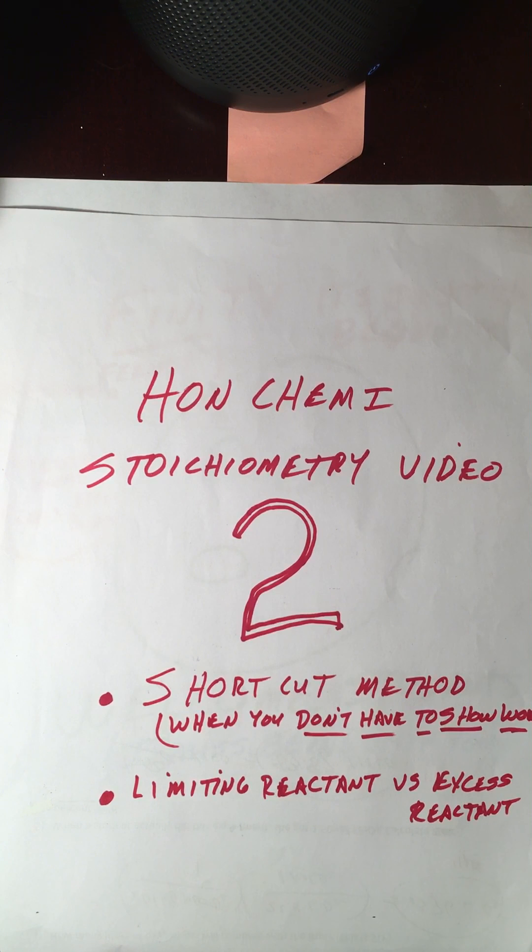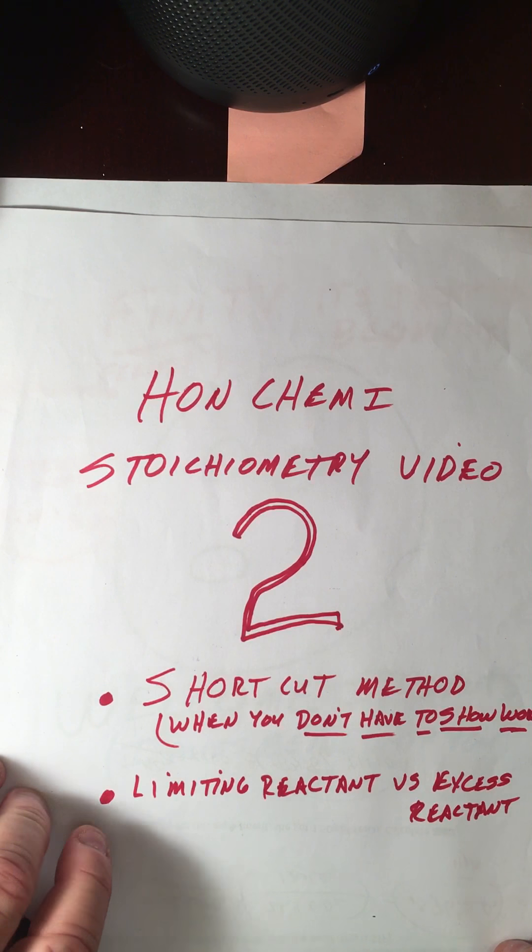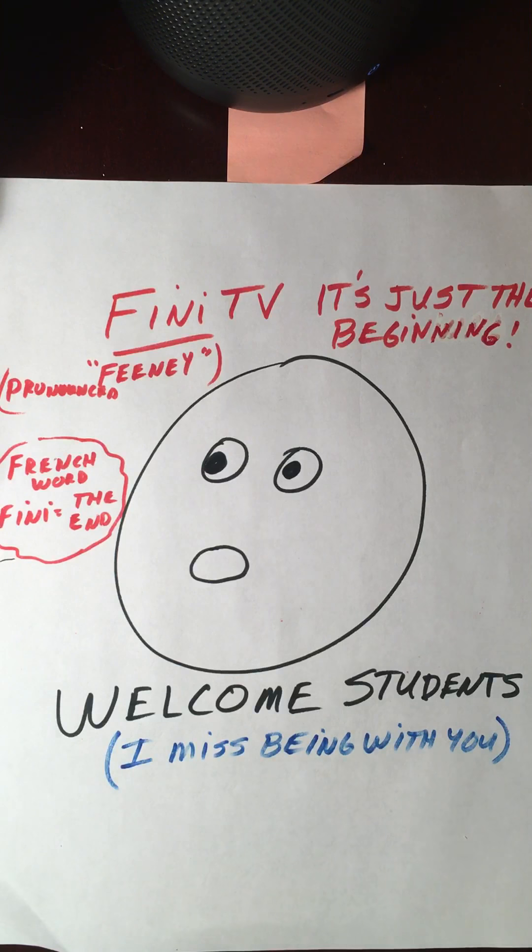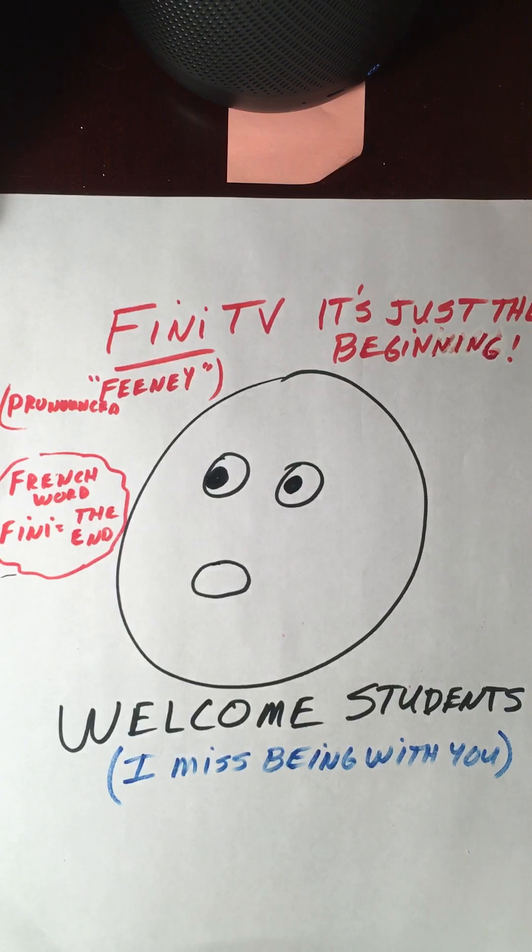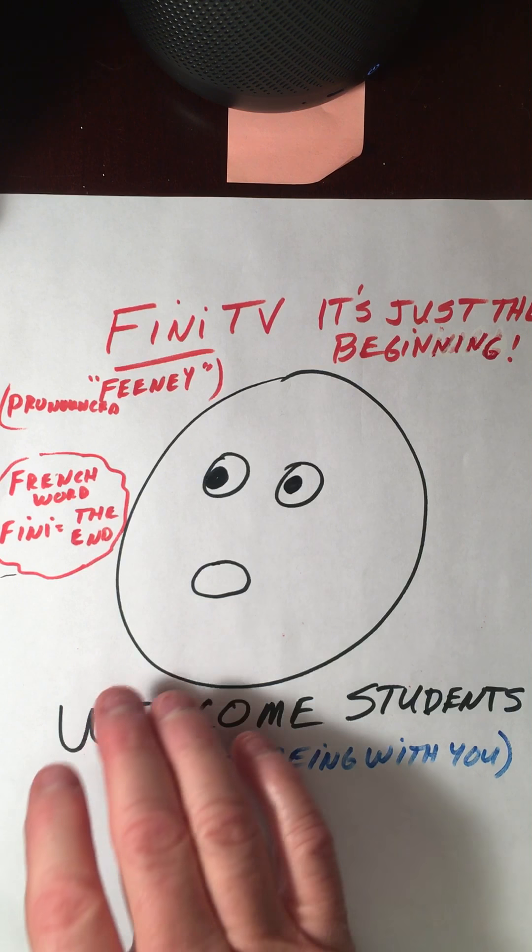Hello, this is the second video in the stoichiometry series. Welcome, thank you very much for joining me. We'll be looking at the shortcut method - you can use this mainly on tests, but not when you have to show your work. Also limiting reactant versus excess reactant.